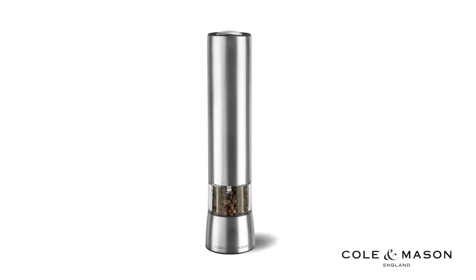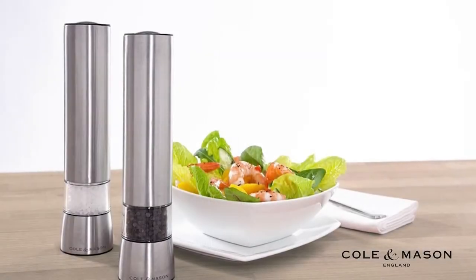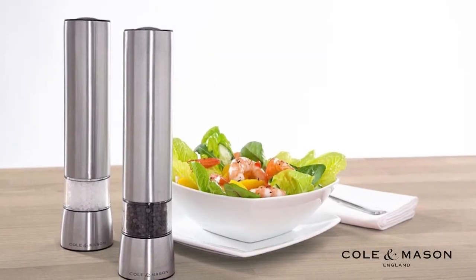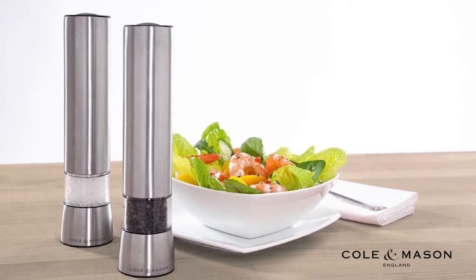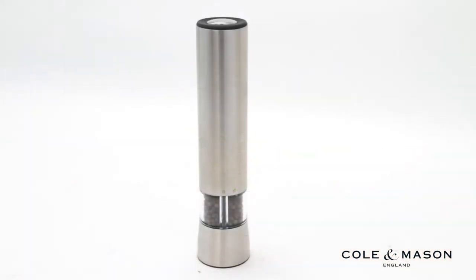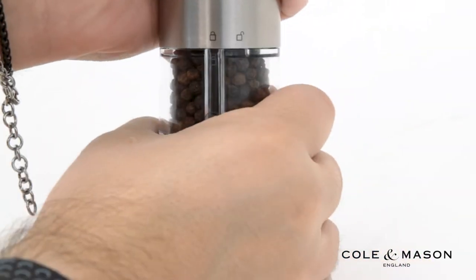The Cole & Mason Hampstead electronic mills allow you to conveniently grind with a simple press of a button. These mills require six AAA batteries to operate. To install the batteries, start by twisting the mill's base and unlocking it from the shaft.